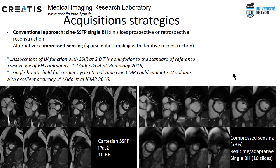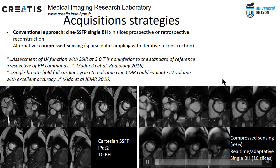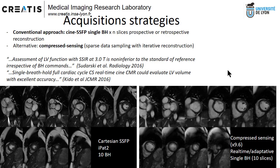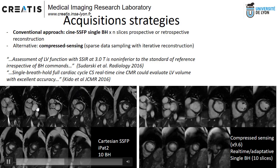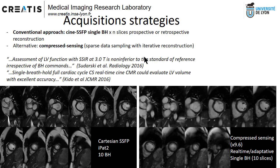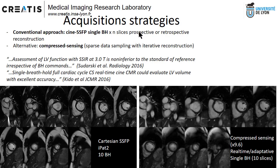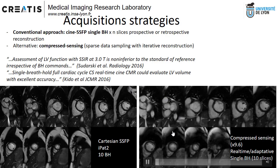There are different strategies that can be used to acquire such data. There is the conventional way, which is CINE SSFP. Usually you take one breath-hold for every level, so it takes between 10 to 14 breath-holds to cover the whole heart. And there are now alternative ways, such as sparse data sampling with iterative reconstruction — the so-called compressed sensing — which provides an approximately 10 times faster acquisition scheme to cover the whole heart.